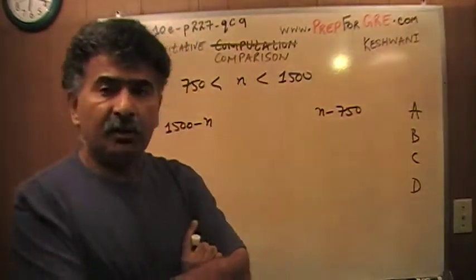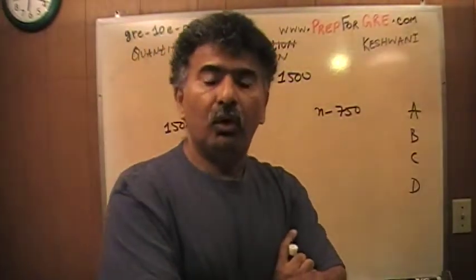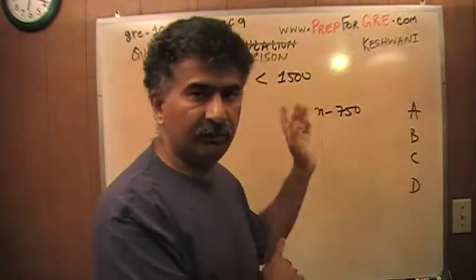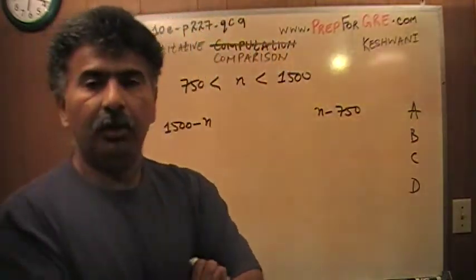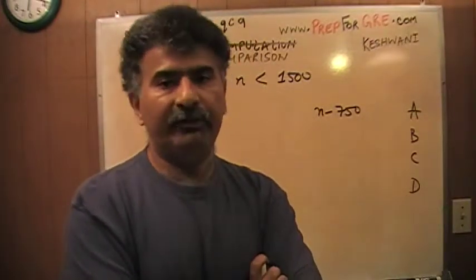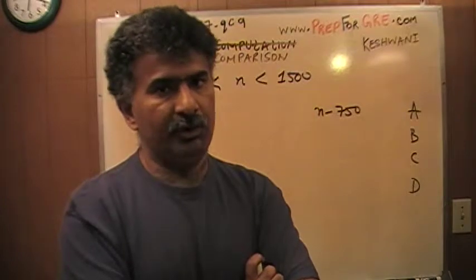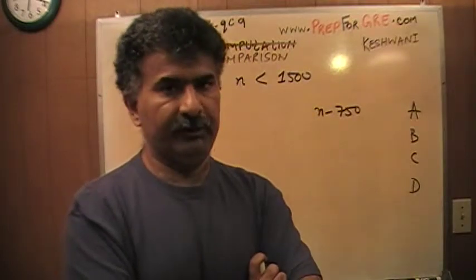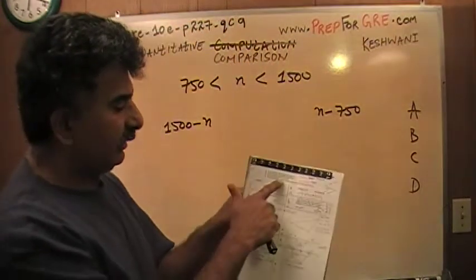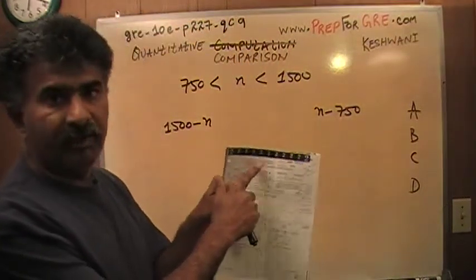And when you pick C for the answer in these quantitative comparison questions, what you're claiming is that the two quantities are always equal. Always is the operative word. You must never forget that word, always. Even though in the instructions it does not say that. If you read the top of the page there, it does not use the word always. But that's what they mean.